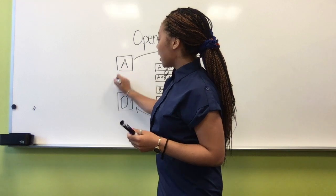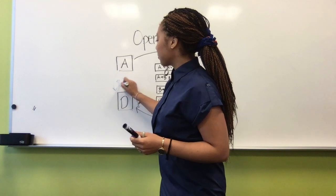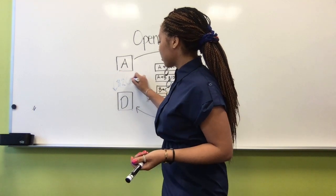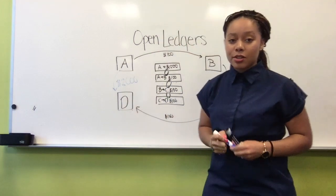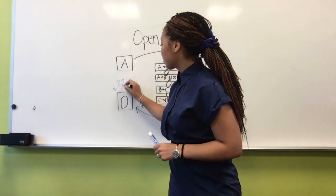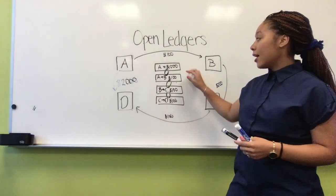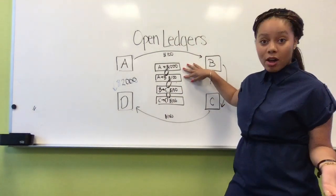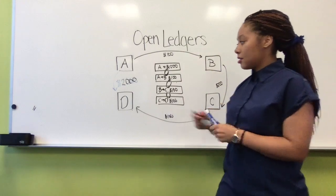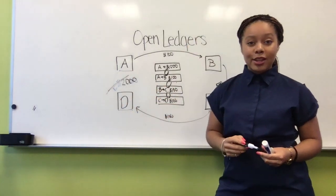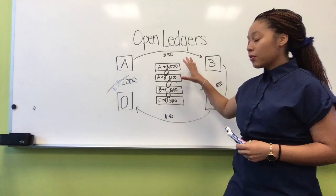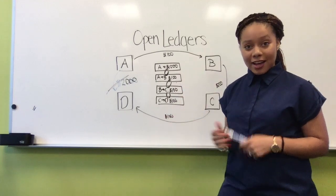So for example, let's say that party A submits a transaction saying, I want to send two thousand dollars to party D. We all know that party A only has nine hundred dollars in their account right now, so that is automatically, boom, no.